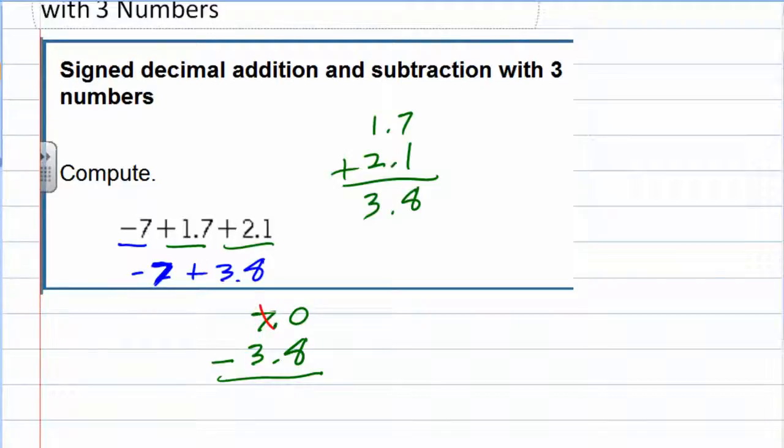Borrowing 1 from the 7 gives me 6. And then the 10 minus 8 is 2. So 6 minus 3 is 3. That gives me a 3.2.